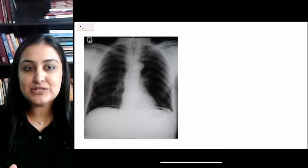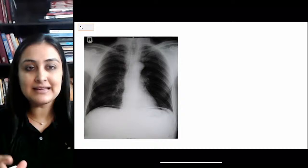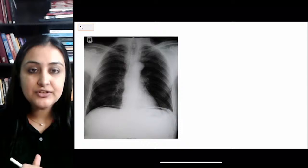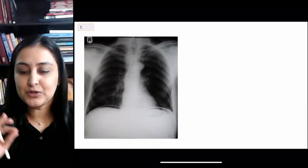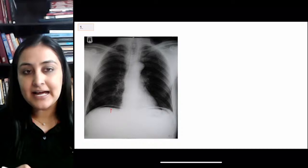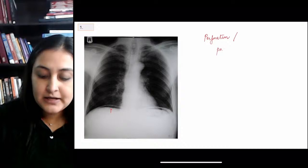Starting with the first most important image — extremely important in every exam. History: severe pain abdomen with guarding and rigidity. Anytime abdominal symptoms are given but a chest X-ray is shown, there is only one possible diagnosis. Your eye should go directly under the right diaphragm. If you see black air under the right diaphragm, the diagnosis is pneumoperitoneum — perforation of a hollow viscus.